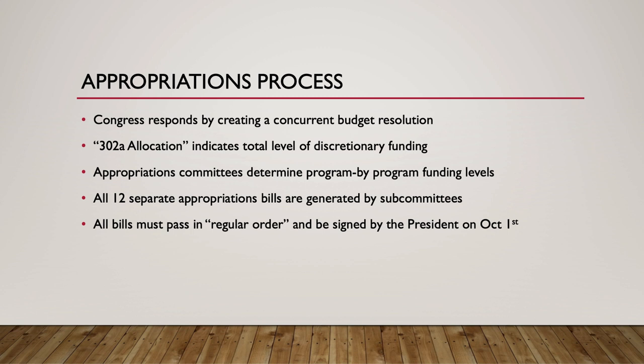All appropriations bills are supposed to be passed in regular order, meaning full passage of all 12 bills through both chambers, which are then signed by the President by the start of the federal fiscal year on October 1st. Failure to provide appropriations by October 1st results in a nearly complete shutdown of federal operations.